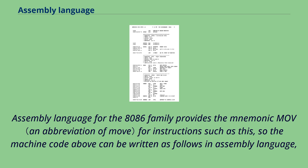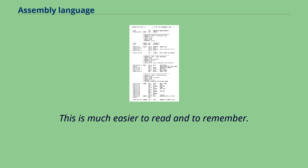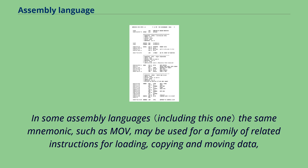Assembly language for the 8086 family provides the mnemonic MOV for instructions such as this, so the machine code above can be written as follows in assembly language, complete with an explanatory comment after the semicolon. This is much easier to read and to remember: MOV AL, 61h — load AL with 97 decimal. In some assembly languages the same mnemonic, such as MOV, may be used for a family of related instructions for loading, copying and moving data.